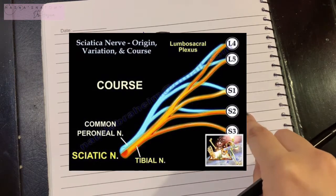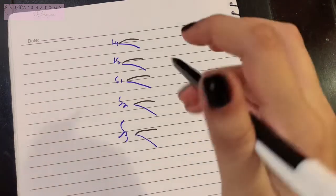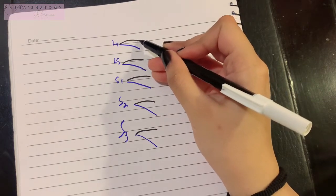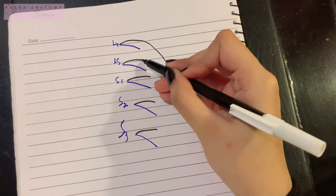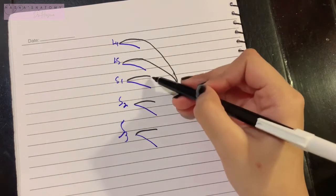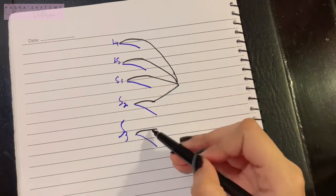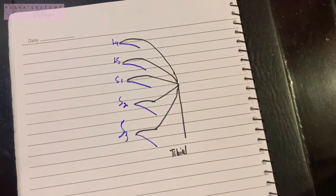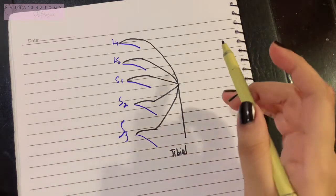The tibial part of the sciatic nerve arises from the ventral divisions or the anterior divisions of the L4, L5, S1, S2, and S3 tibial part. Then we have the common peroneal part.